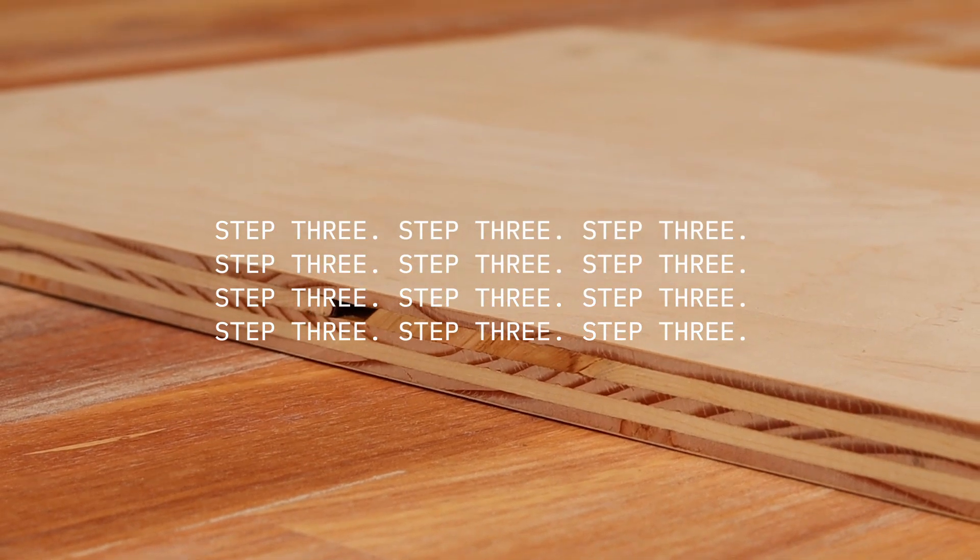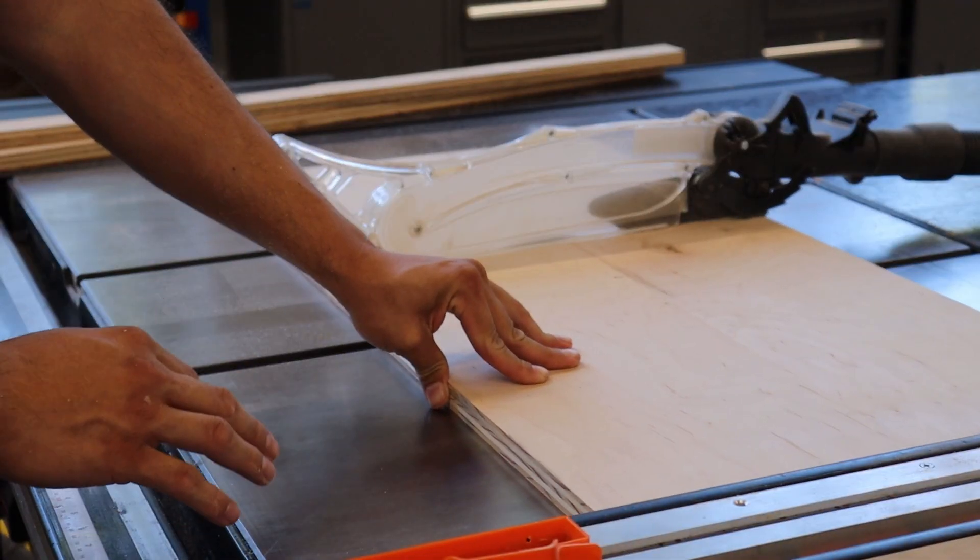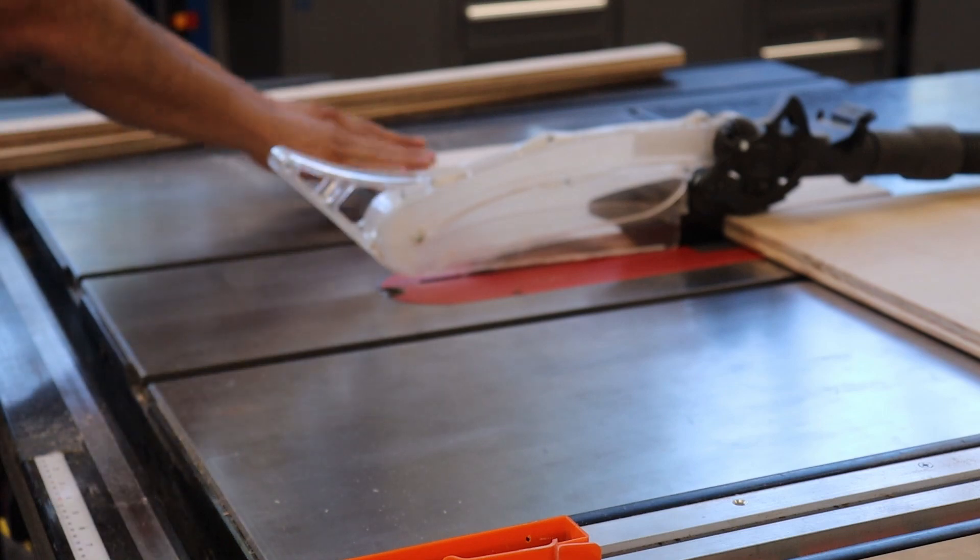Step number three. Cut the three quarters of an inch plywood to 17 inches by 24 inches to make the press bed.